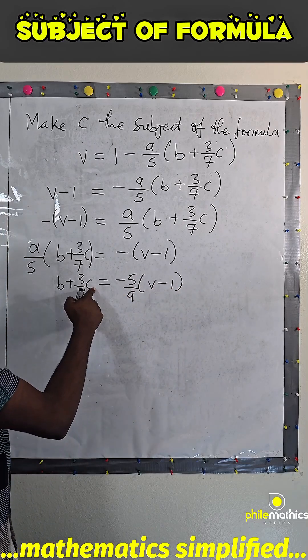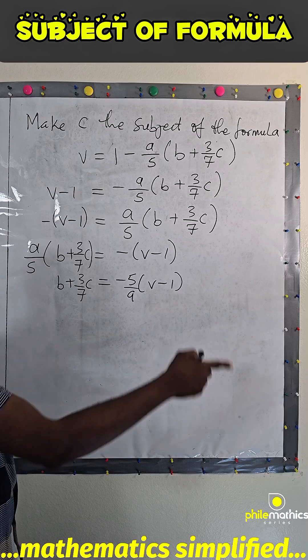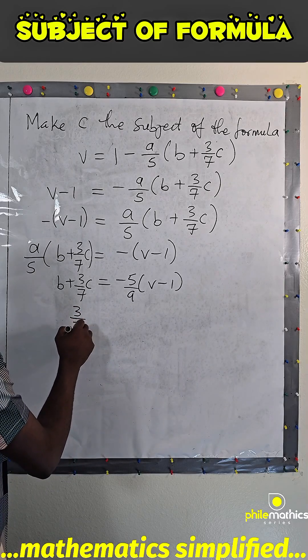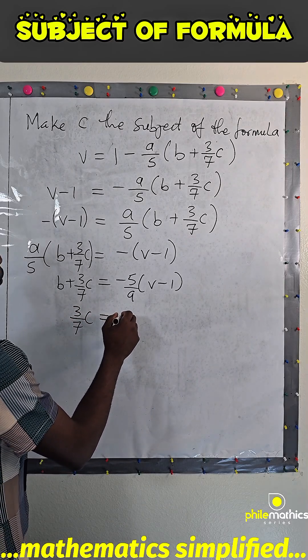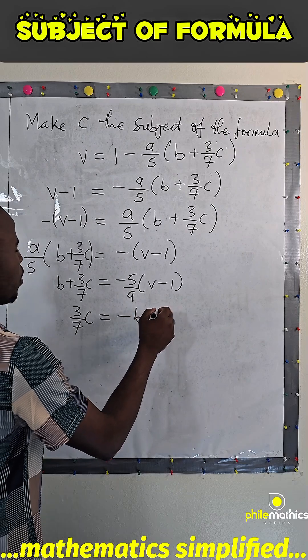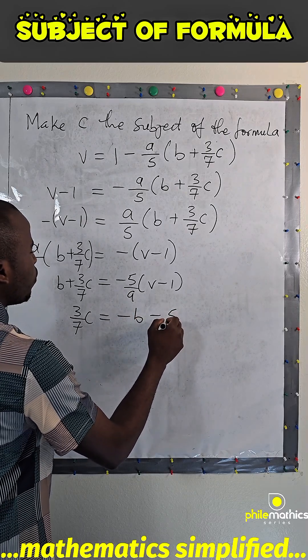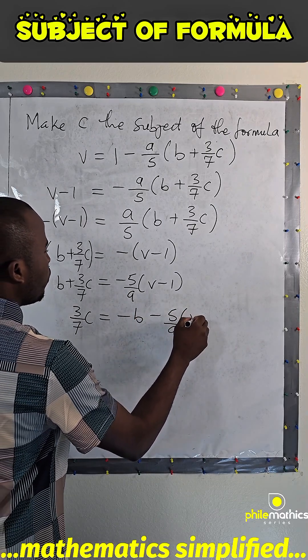Since I am looking for C, I will subtract B from both sides to get 3 over 7, C equals minus B minus 5 over A, V minus 1.